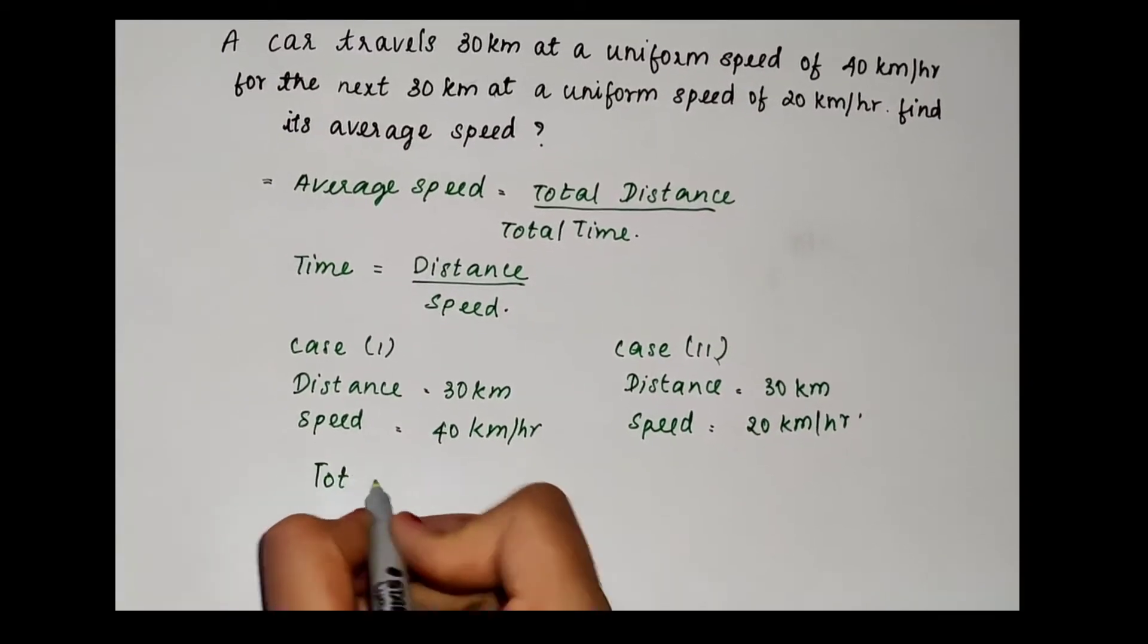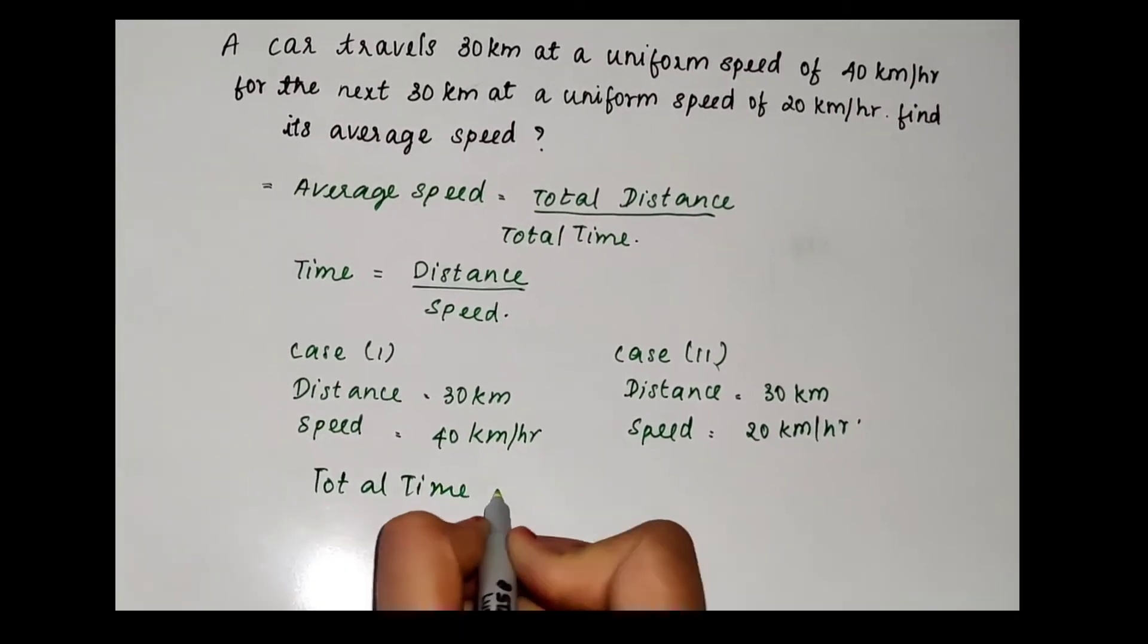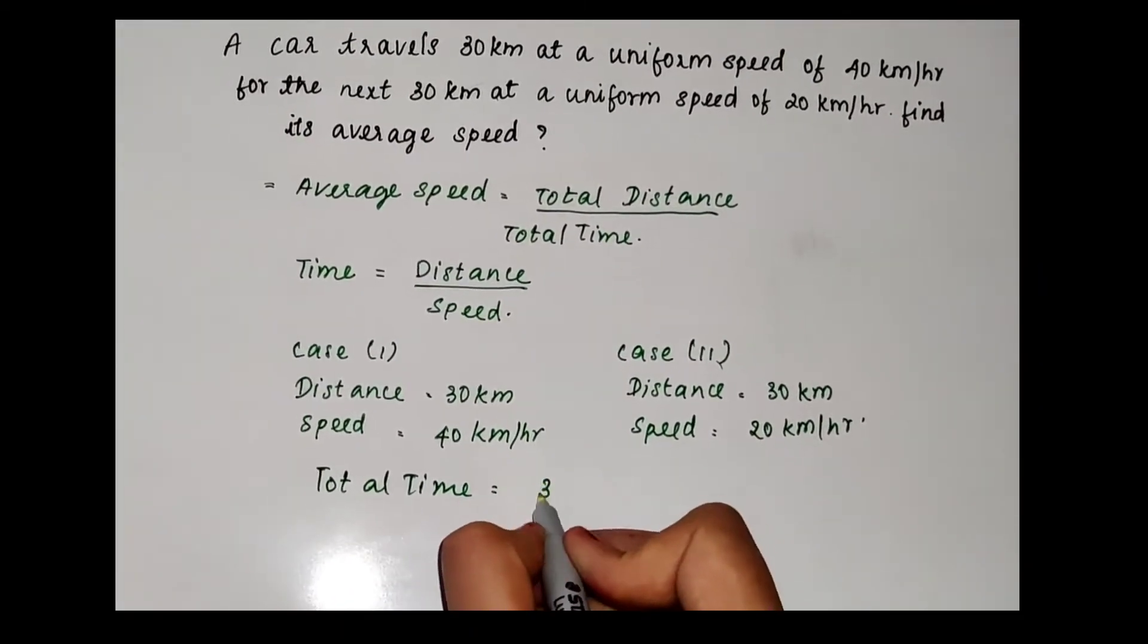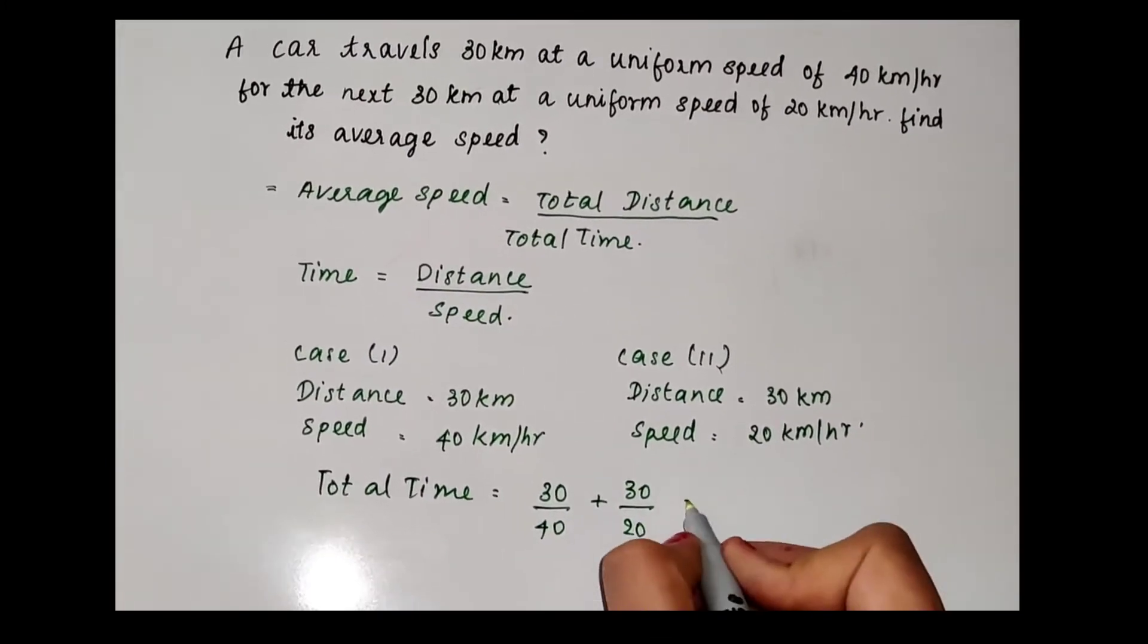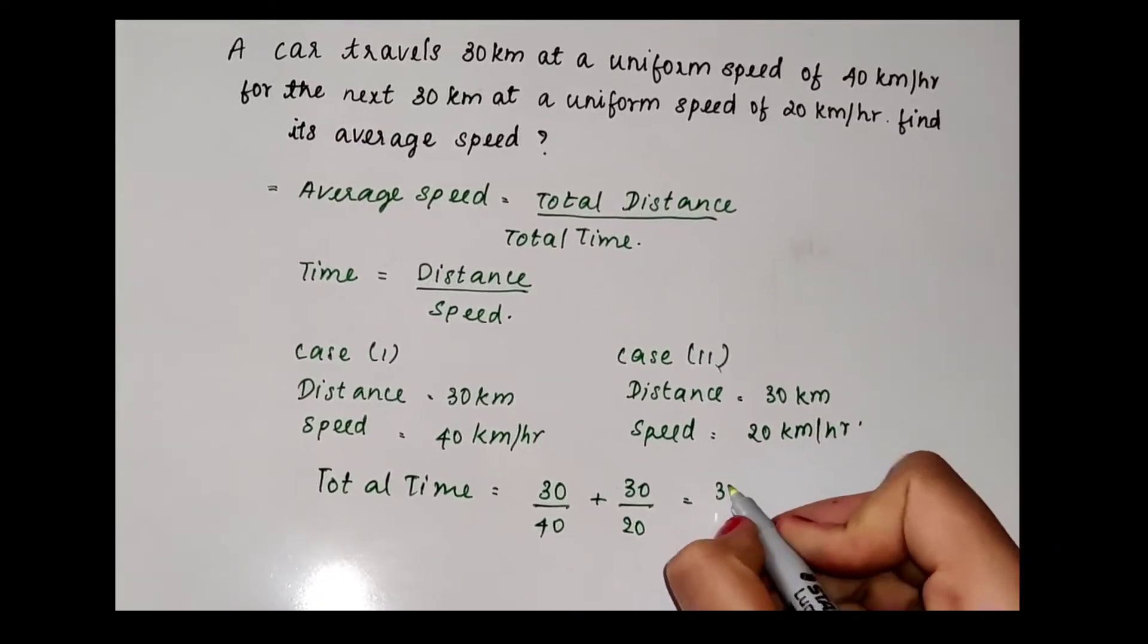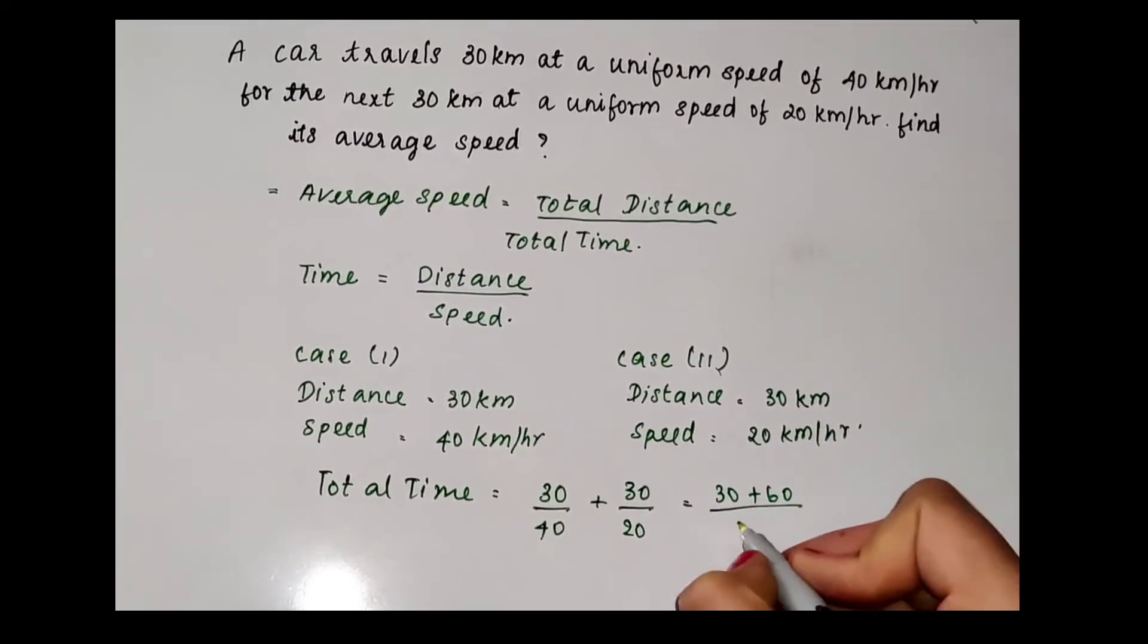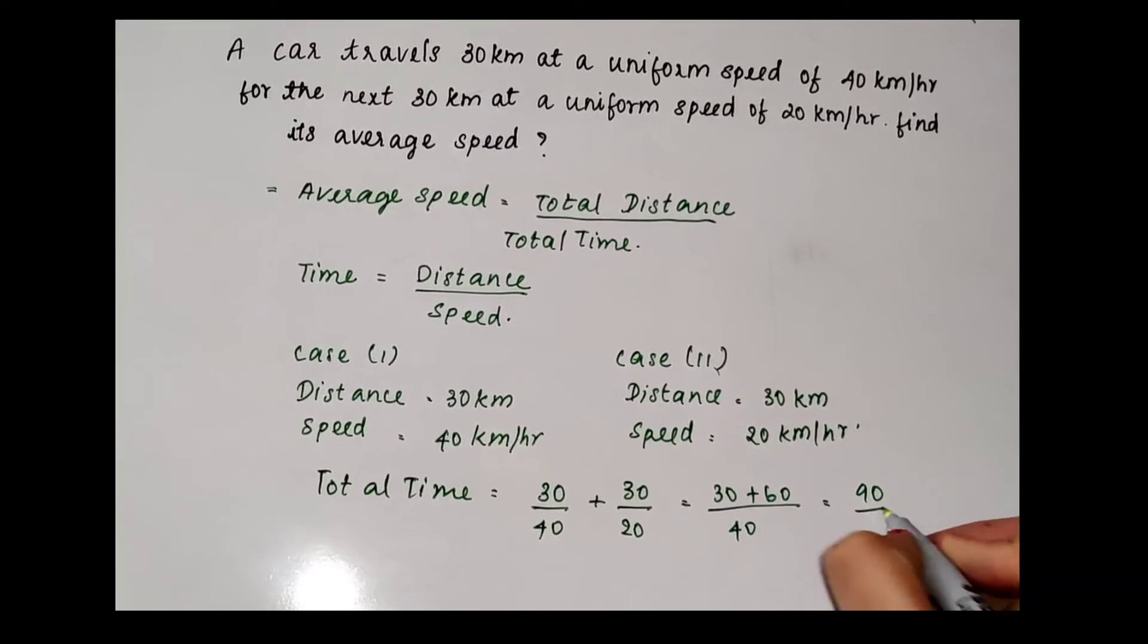Let us add case 1 time and case 2 time, which is total time. Total time is equal to 30 by 40 plus 30 by 20, is equal to 30 plus 60 by 40, is equal to 90 by 40, is equal to 2.25 hours.